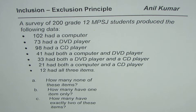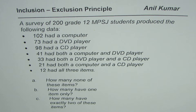I'm Anil Kumar sharing with you a question from a previous test paper. This is on the inclusion and exclusion principle. The question is: a survey of 200 grade 12 MPSJ students produced the following data — 102 had a computer, 73 had a DVD player, 98 had a CD player, 41 had both a computer and DVD player, 33 had both a DVD player and a CD player, 21 had both a computer and a CD player, and 12 had all three items.